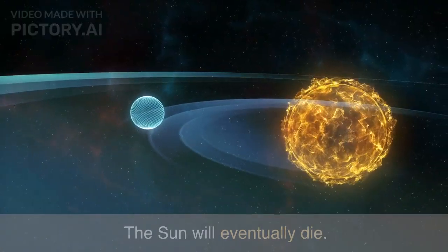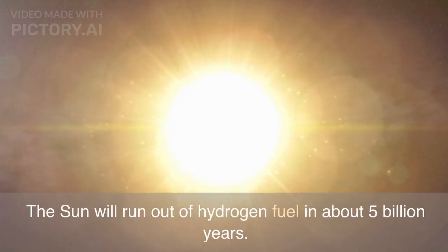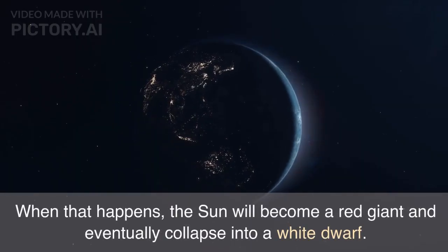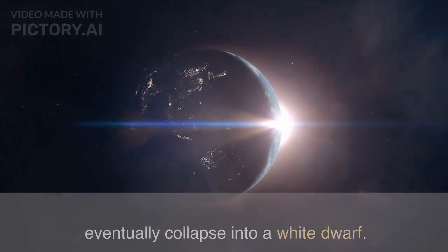The Sun will eventually die. The Sun will run out of hydrogen fuel in about 5 billion years. When that happens, the Sun will become a red giant and eventually collapse into a white dwarf.